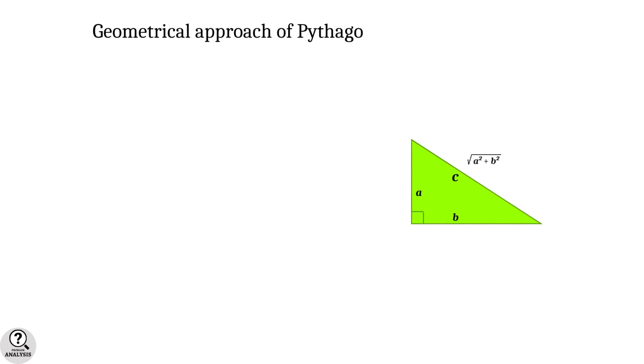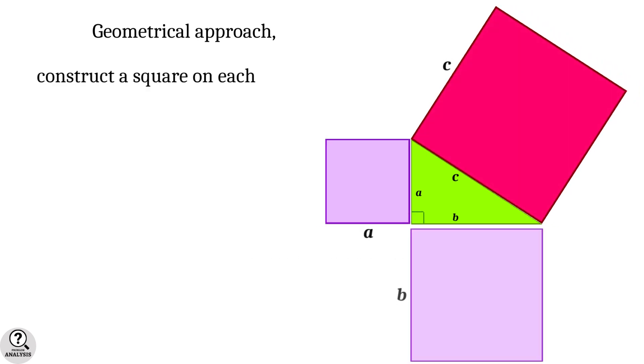Let's discuss. By a geometrical approach, we can state this theorem in another way. First, take a right triangle. Now, construct a square on each of the three sides.